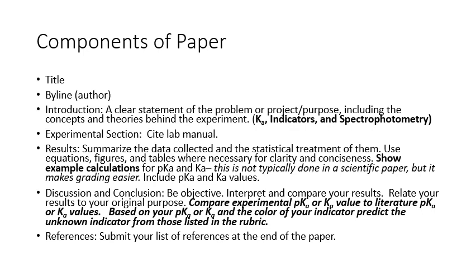The discussion and conclusion, you want to be objective. You want to compare your results back to the introduction. Talk about why your results are important and why it's important to know what the pKa and Ka values are. You want to compare them to literature values and make sure you cite where those literature values came from. And then talk about the color of the indicator and how you decided which unknown, what your indicator was. Do make sure you include references. So at the very end of the paper, this is where you're going to put the full reference properly documented and referring back to the references that you used throughout the paper.